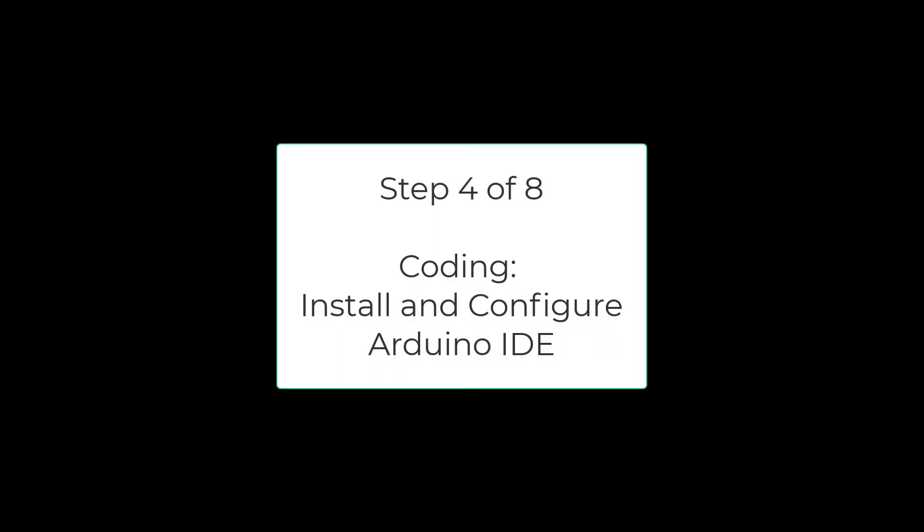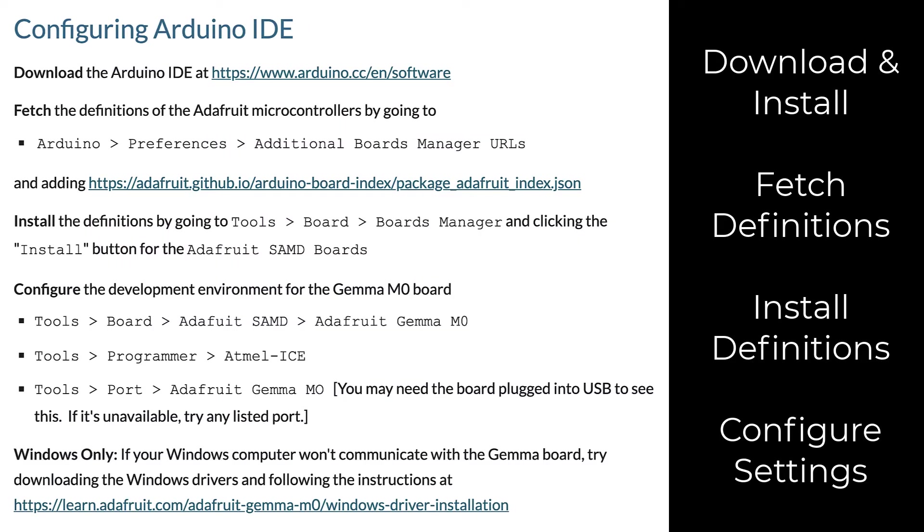If you haven't already, you'll need to install and configure Arduino IDE. Here's how it works. There are four major steps to installing and configuring. First, you must download and install the Arduino IDE from the Arduino.cc website. Then we have to fetch the definitions for the Adafruit microcontrollers using the provided URL. Then we install those definitions from the board manager. And finally, configure the settings for the environment.